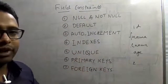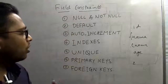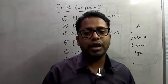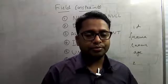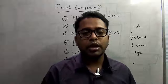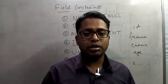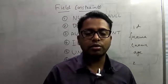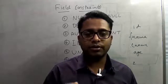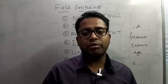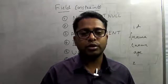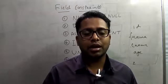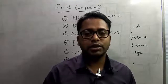So to summarize, we discussed null and not null, default, auto increment, index, unique, primary key, and foreign key constraints. All these constraints are equally important for maintaining data consistency. I hope you found this video useful. Please subscribe to the channel, click the bell icon to get notifications of upcoming videos, like the video, and share it with your friends. See you in the next video — thanks for watching.